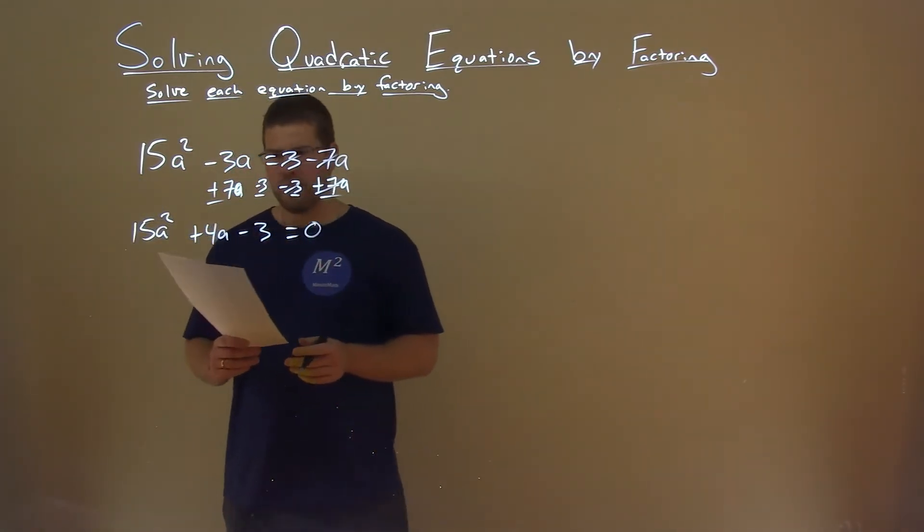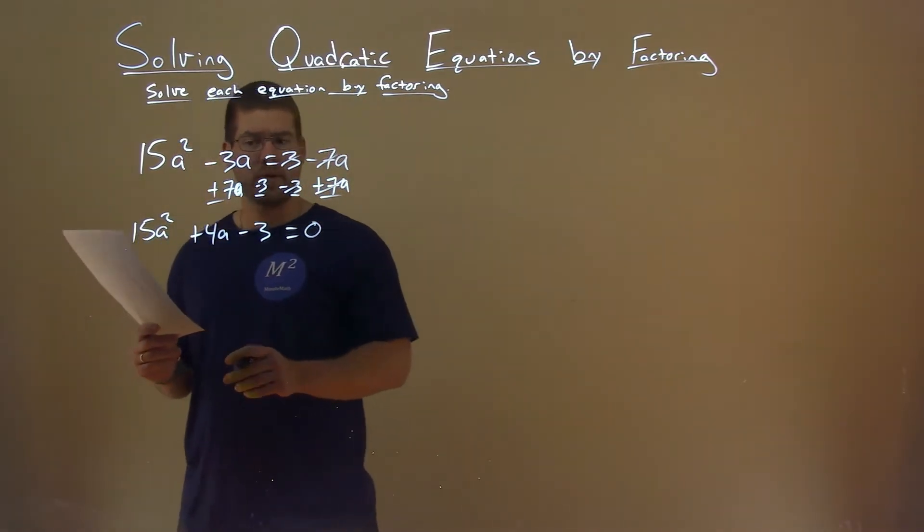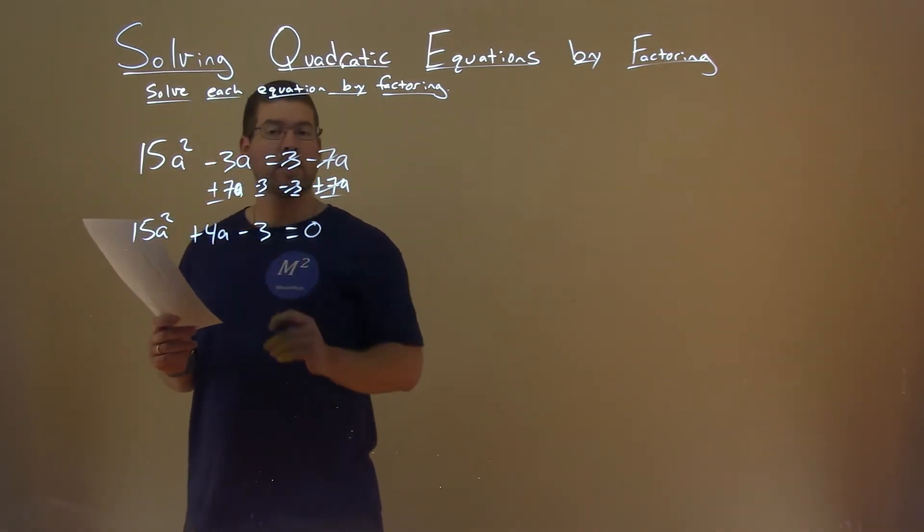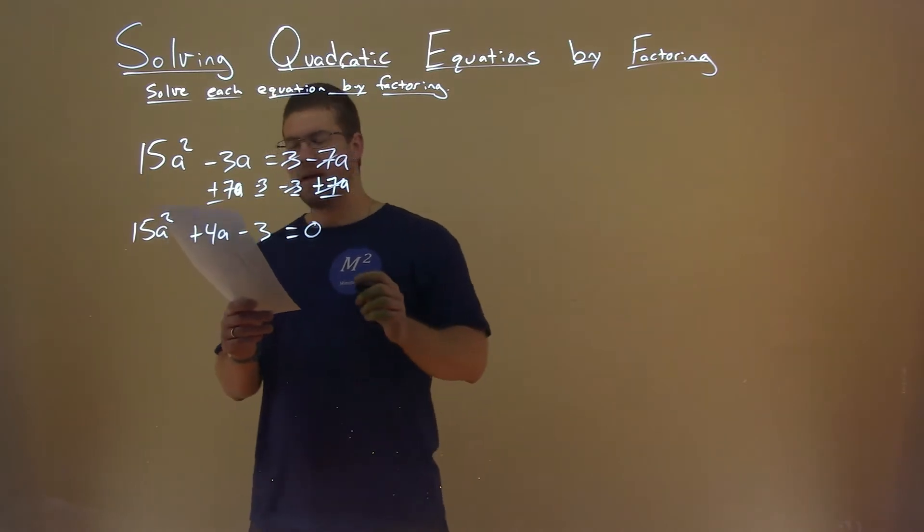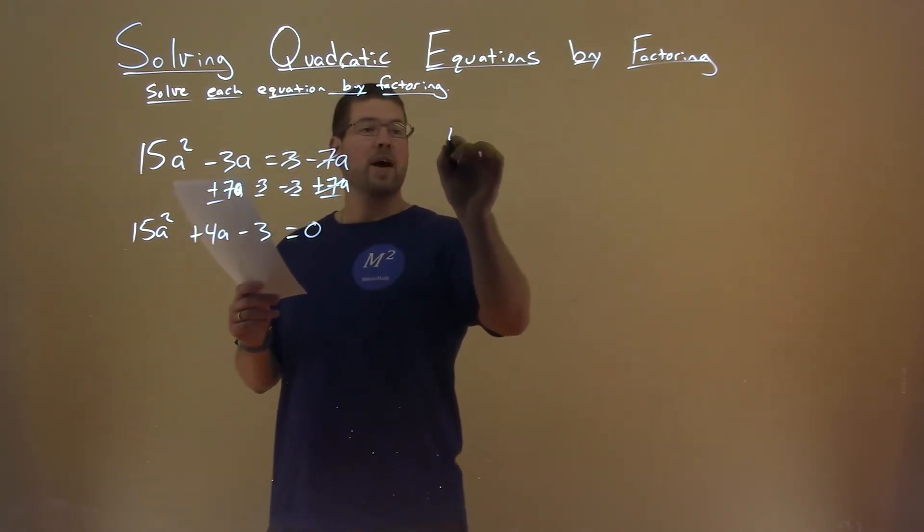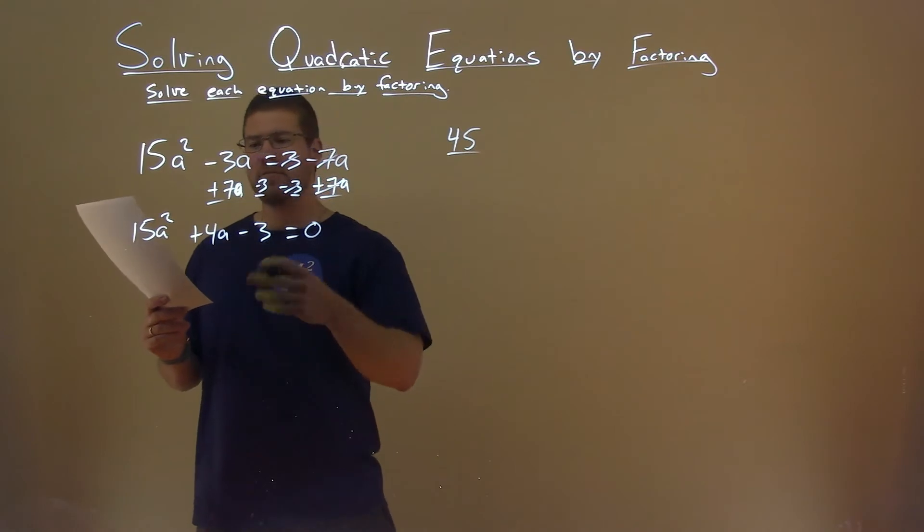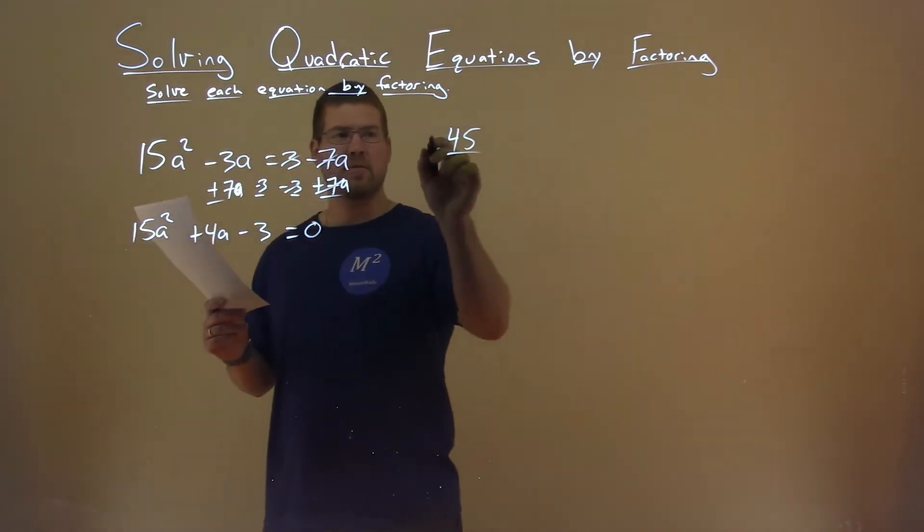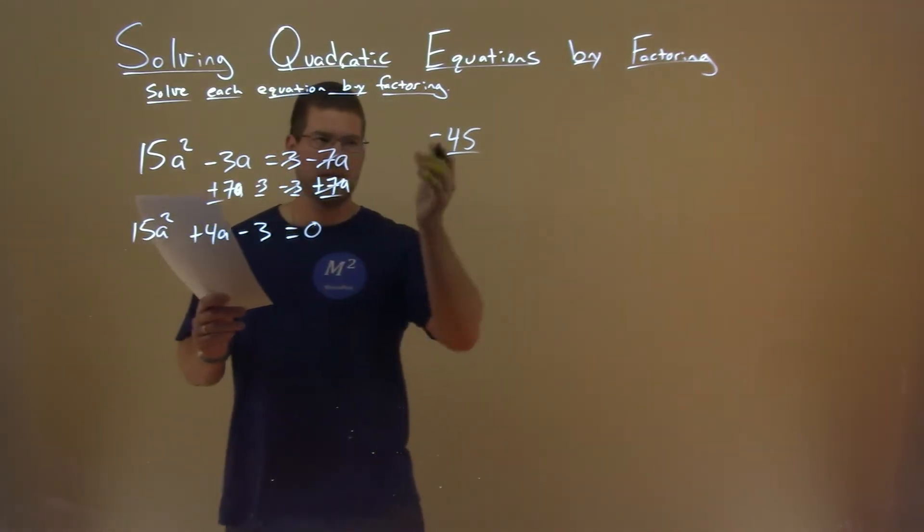Right off the bat, I can't really see something that factors here, so I'm going to do it by grouping. 15 times 3 is 45. And that's a negative, so we're going to find two numbers that multiply by -45, right? 15 times -3 is -45.